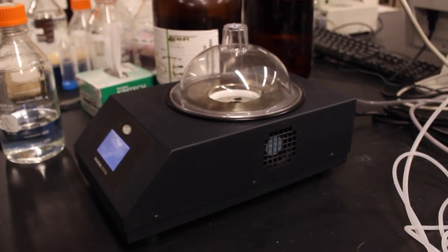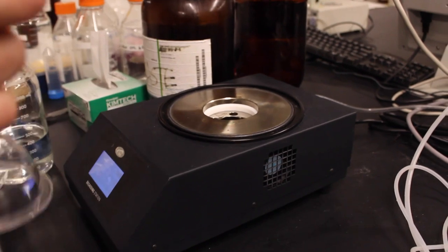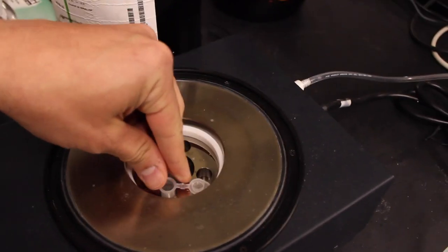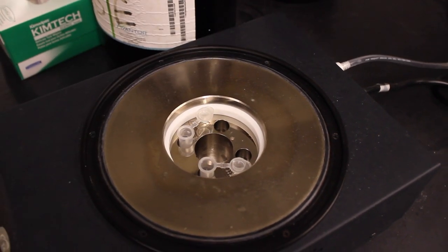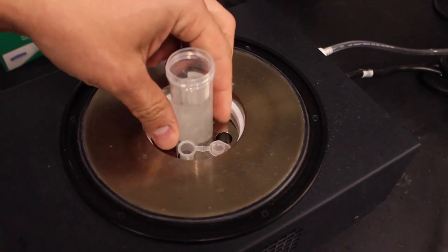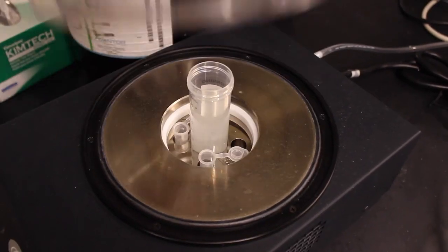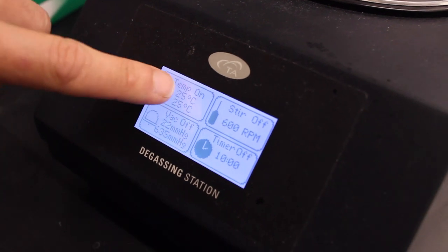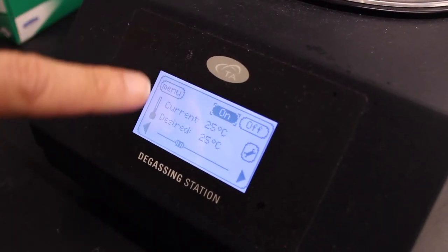To use the degassing station, you would put your samples into these wells here so you can put small eppendorfs into the side wells and if you want to put a larger tube, you can put that into the center well. If you're running at a temperature different than room temperature, on the menu you can set the temperature. Currently we're going to just run at 25 degrees.